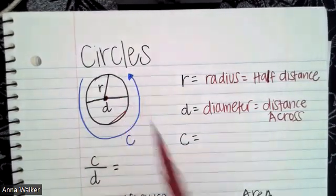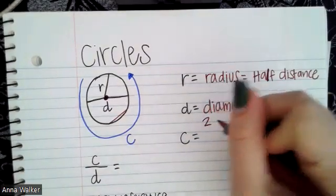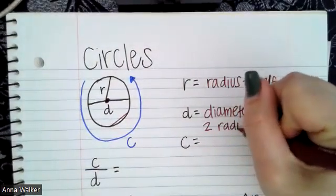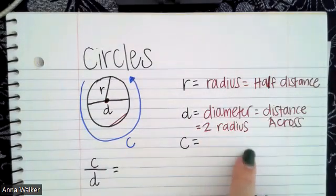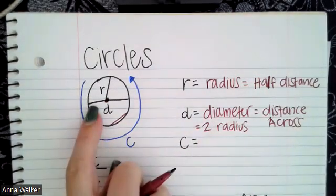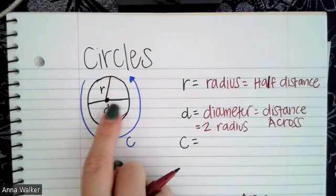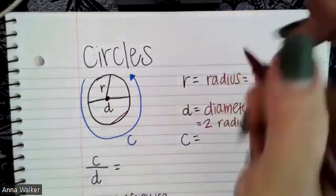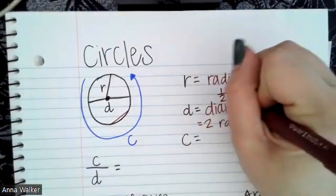If we look at the relationship between radius and diameter: one diameter is equivalent to two radii. The diameter equals two times the radius — from one edge to the center is one radius, and from the center to the other edge is another radius. So the radius is half of a diameter.